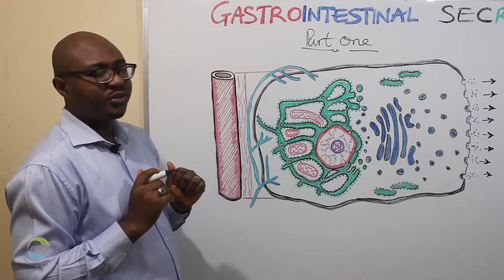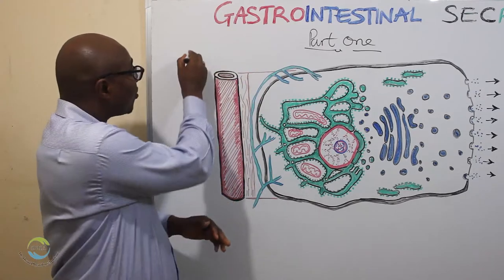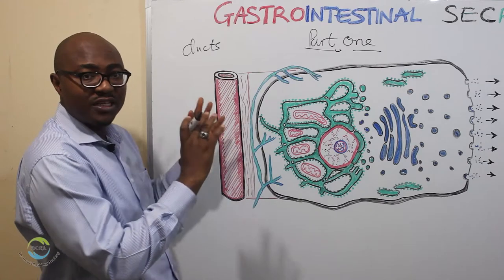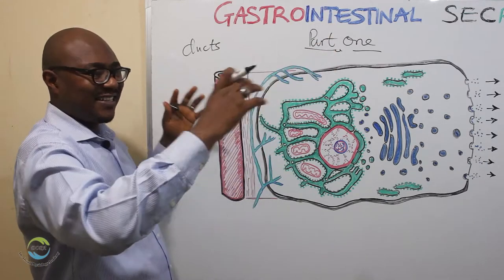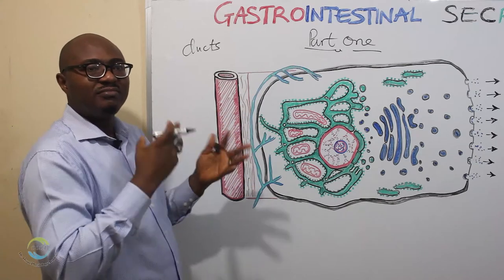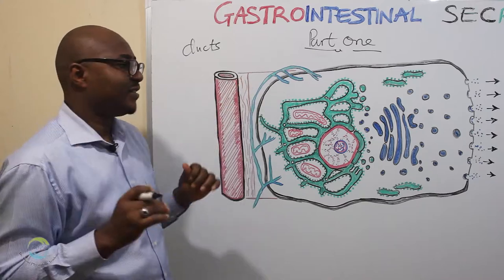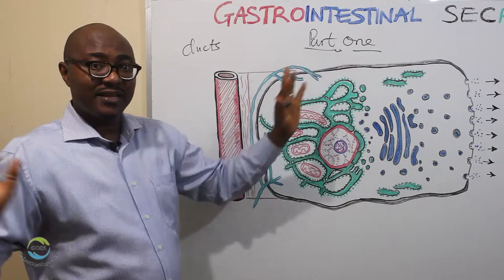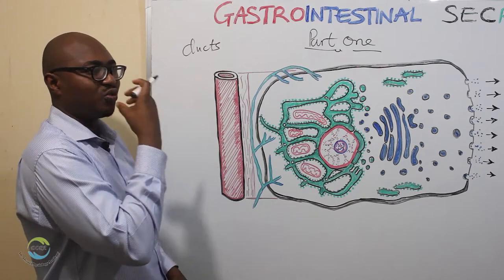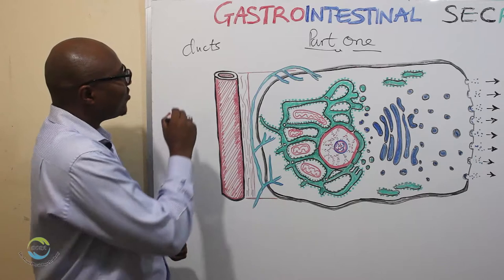One thing special about GIT secretion is that they are conducted specially through ducts, and they open directly into the lumen of the GIT. The GIT is a tract — a long tube about 20 feet long, and in autopsy specimens it can be as long as 30 feet because the muscles are no longer contracted. The GIT lumen is continuous with the outside environment.